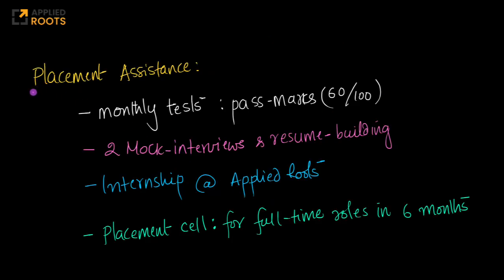As far as the placement assistance is concerned, every month we will have a test which constitutes of all of the concepts in programming, data structures and algorithms that you have learned in this program. The clearing marks or the pass marks in this would be 60 out of 100. All the students who obtained 60 or more marks in these monthly tests, most of these monthly tests are designed keeping in mind the interviews and problems that you need to solve at product-based companies and product-based startups.